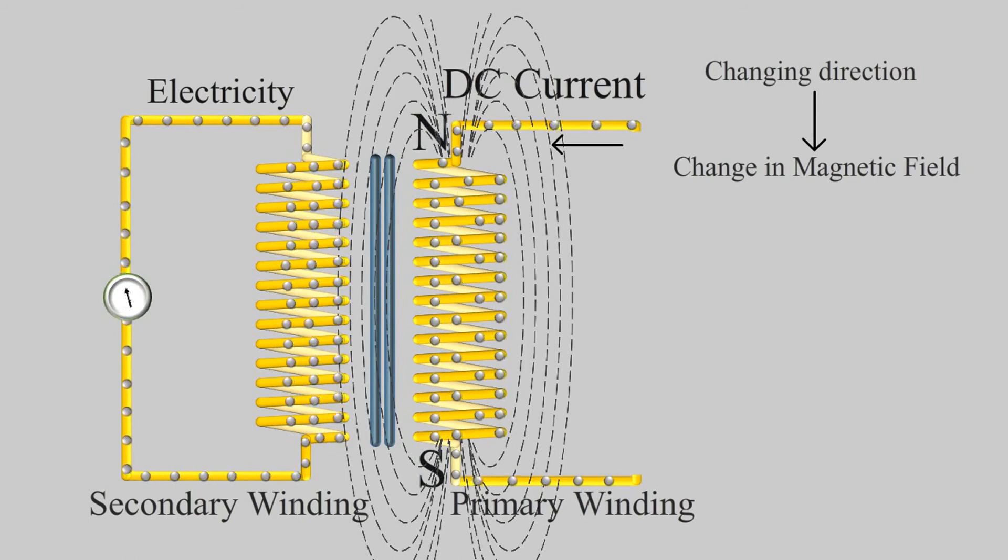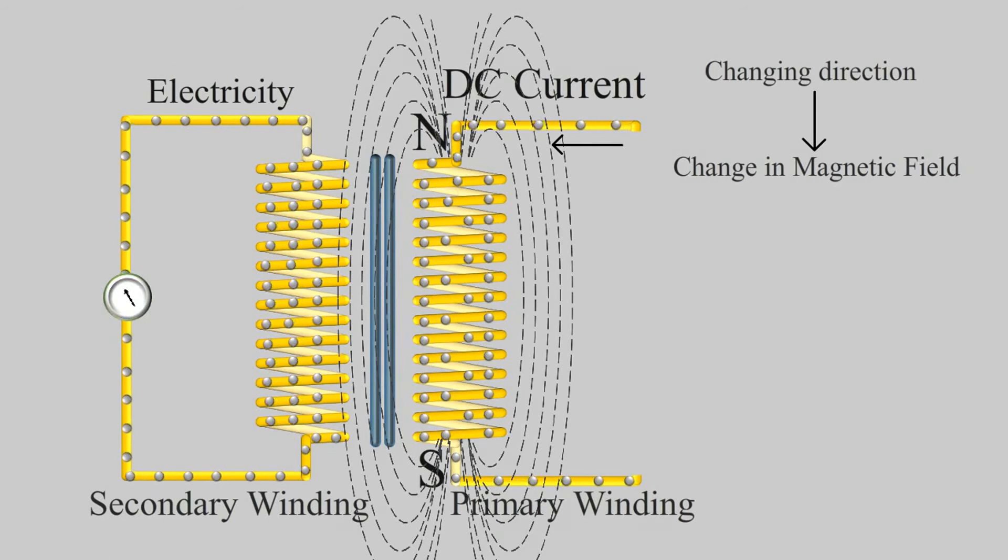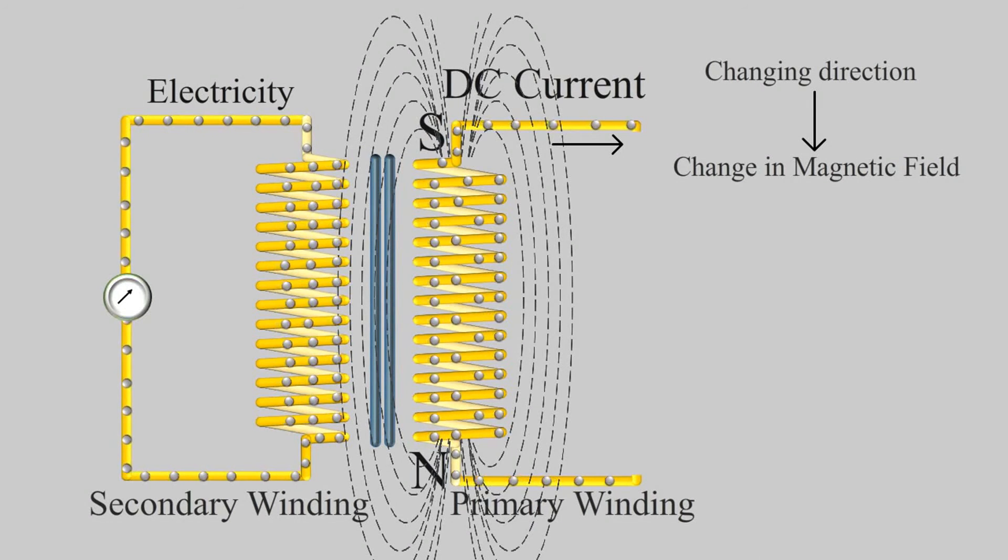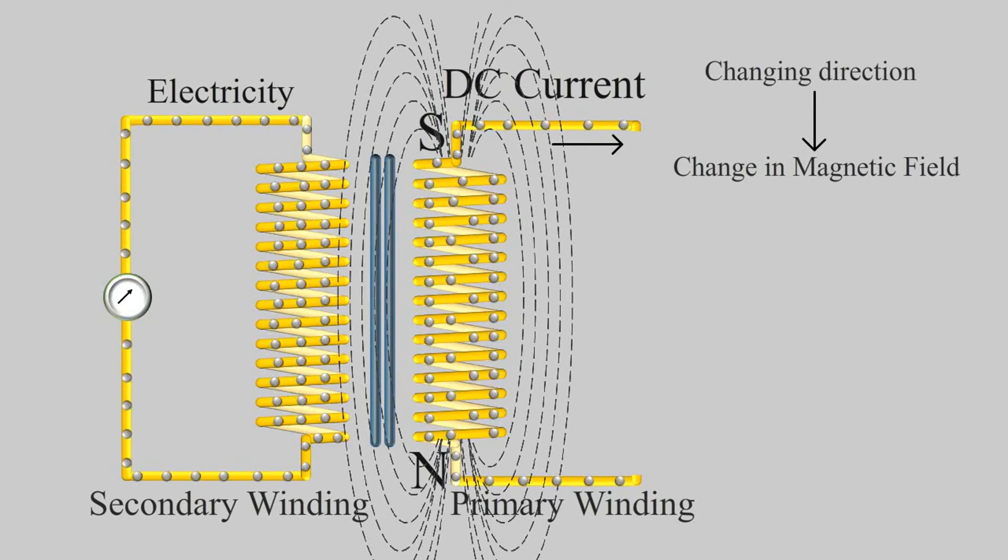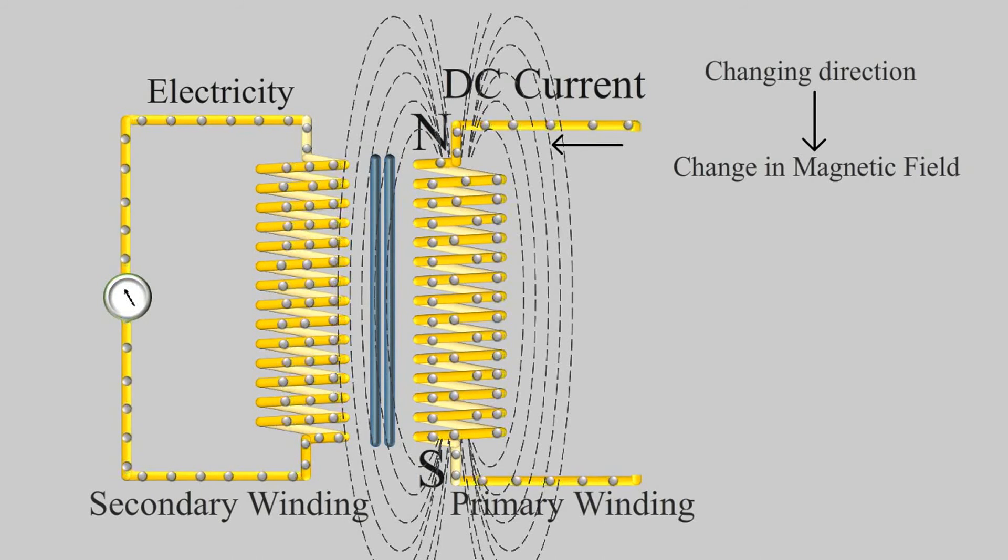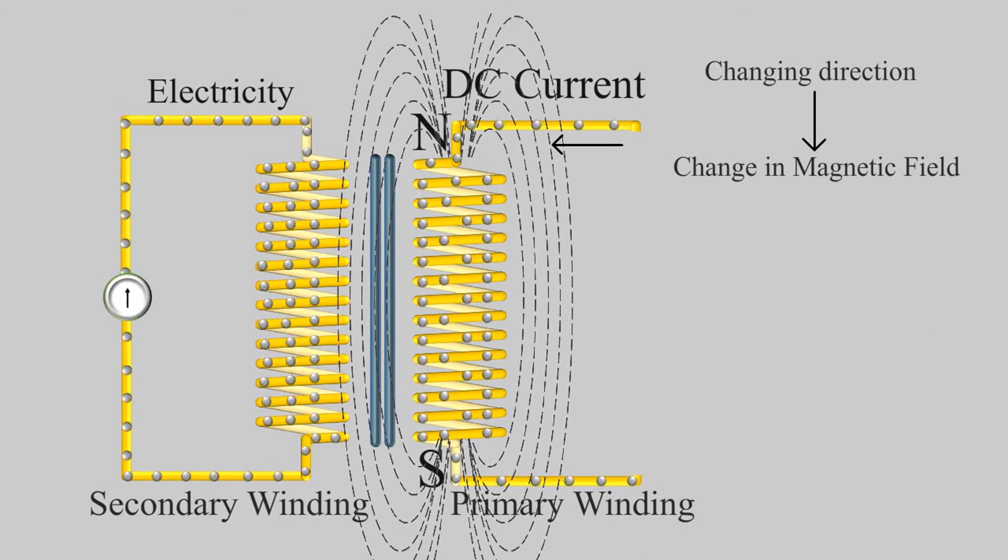Which actually induces electricity in the secondary winding. Now to keep electricity flowing continuously in secondary winding you have to continuously keep changing the direction of flow of current. And what's the easiest way of doing it? It is using alternating current.